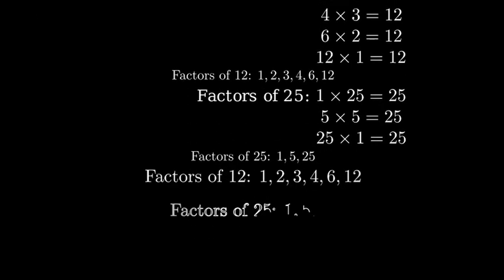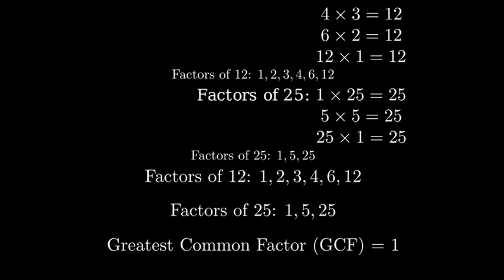Now let's look at both sets of factors and find the greatest common factor. Looking at both lists, we can see that 1 is the only number that appears in both lists. Therefore, 1 is the greatest common factor.